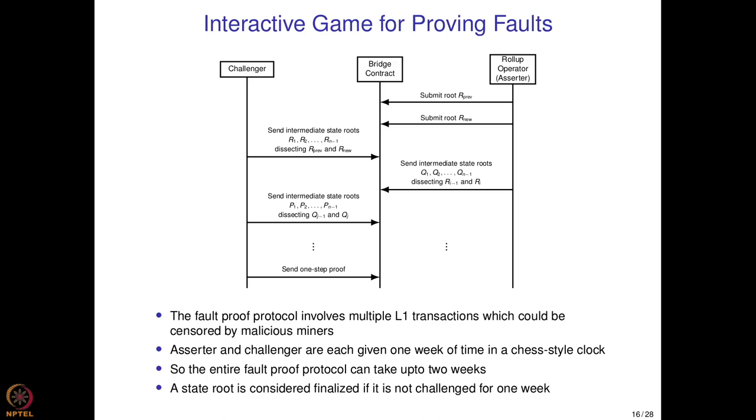If nobody challenges a state root for 1 week it is considered finalized. Regarding whether the challenger is a smart contract: it is just an externally owned account, some public key. Most rollup projects will provide software to help initiate the challenger's actions easily, since generating intermediate state roots is not trivial for non-technical users. The process of generating intermediate state roots would be automated — you just need enough ether for the deposit and then run some command to send the intermediate state roots.